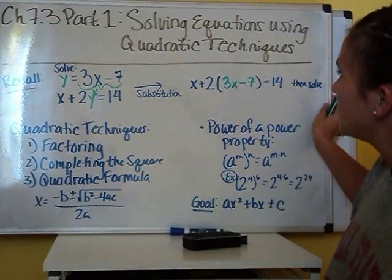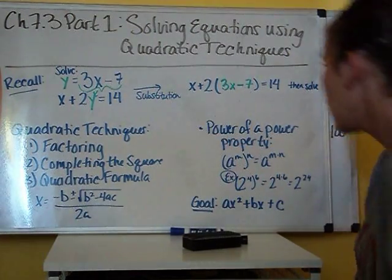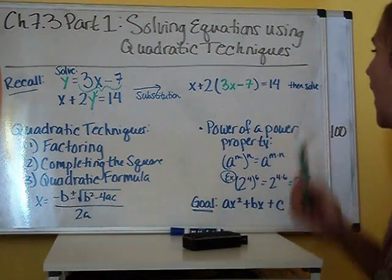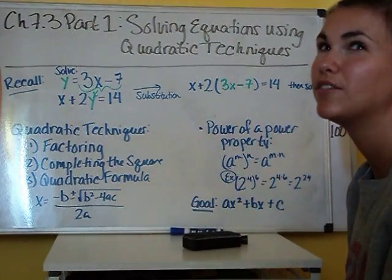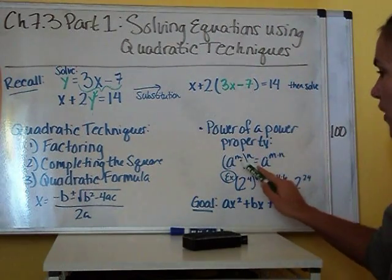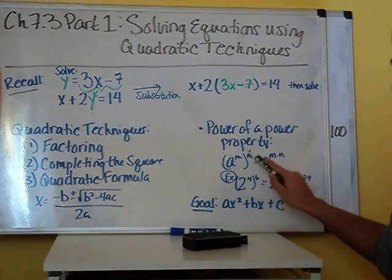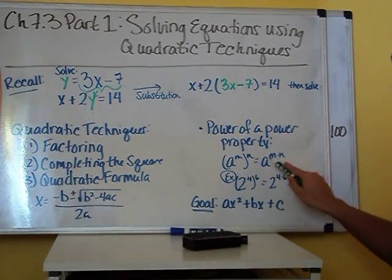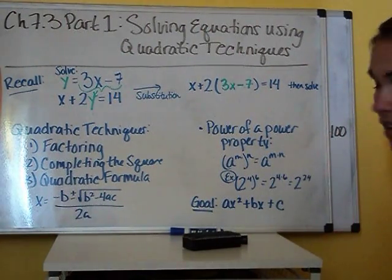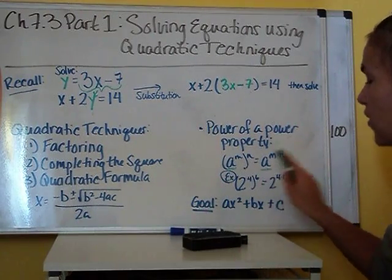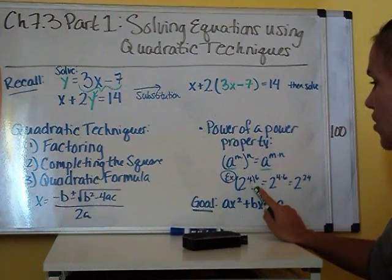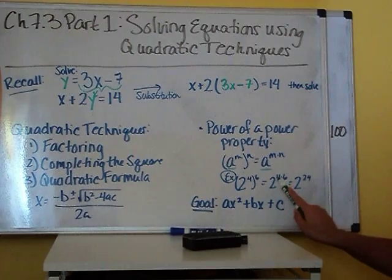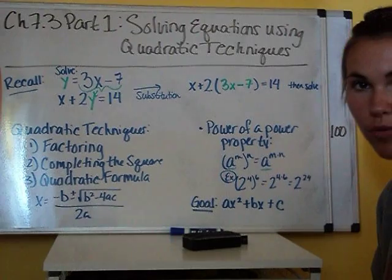So our tools so far are substitution and our quadratic techniques. We're also going to need to know the power of a power property. We already know this from Algebra 1 as well as Chapter 1 this year, but just a reminder: when you have something to a power to a power, you can simplify that by multiplying the exponents together — the base stays the same. For example, 2 to the 4th to the 6th equals 2 to the 24th power.